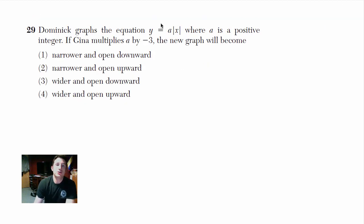Alright, number 29 says, Dominic graphs the equation y equals a times the absolute value of x, where a is a positive integer. If Gina multiplies a by negative 3, the new graph will become... Alright, so I'll be honest, I don't remember if you guys get to bring a TI, one of those graphing calculators on your test. If you can, you can play around with this and just kind of figure out what happens. But basically, I'll start here.